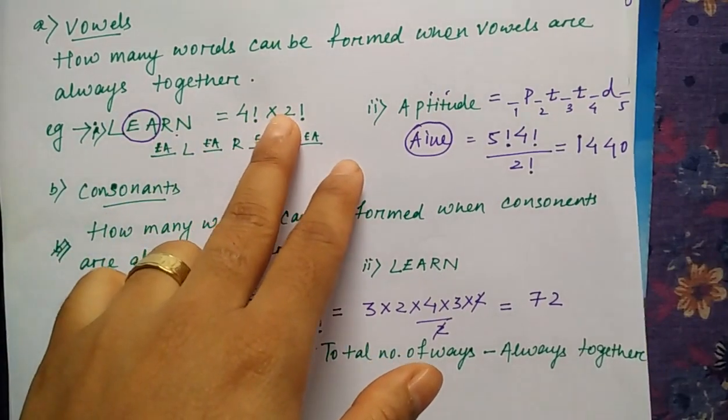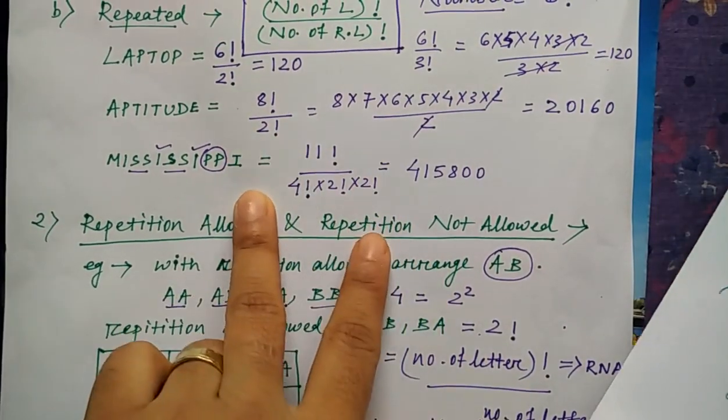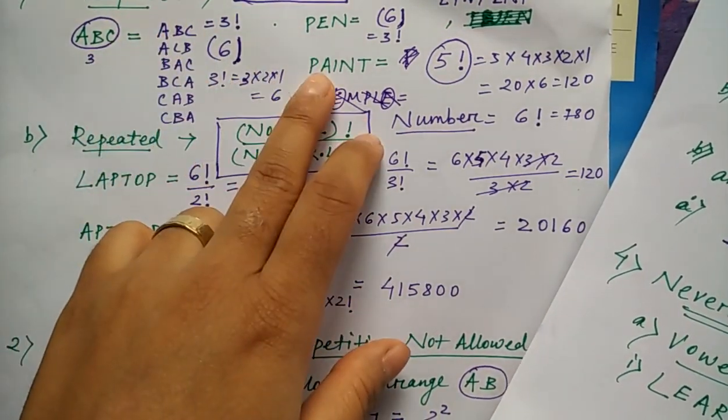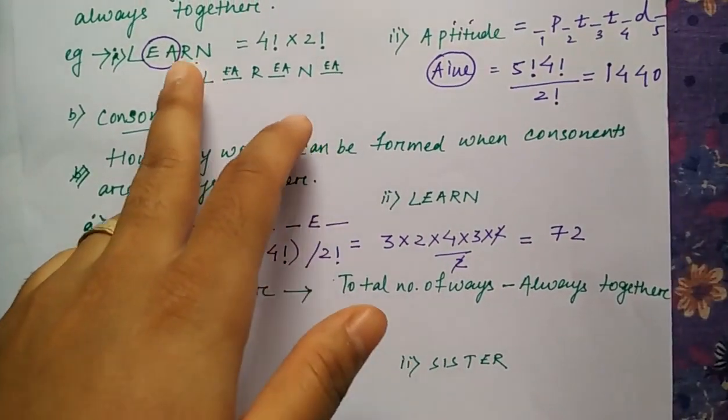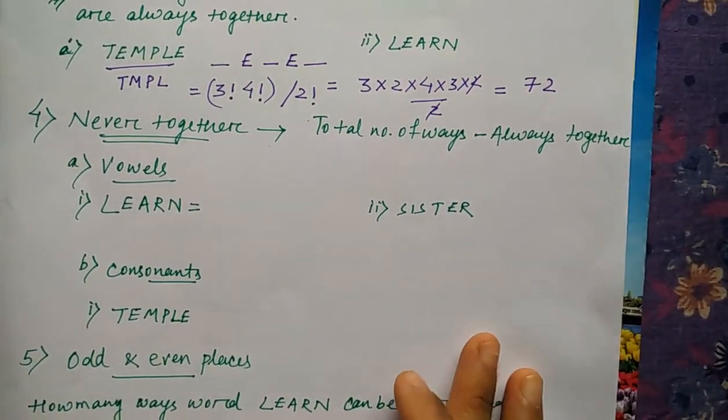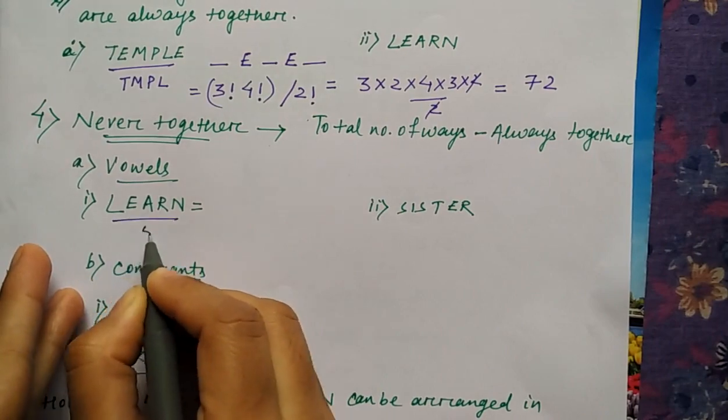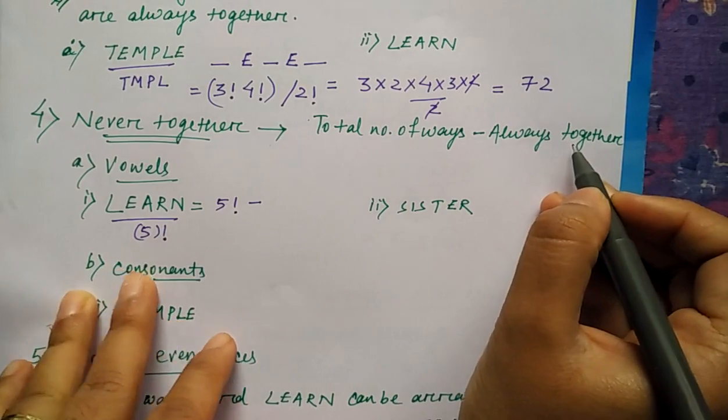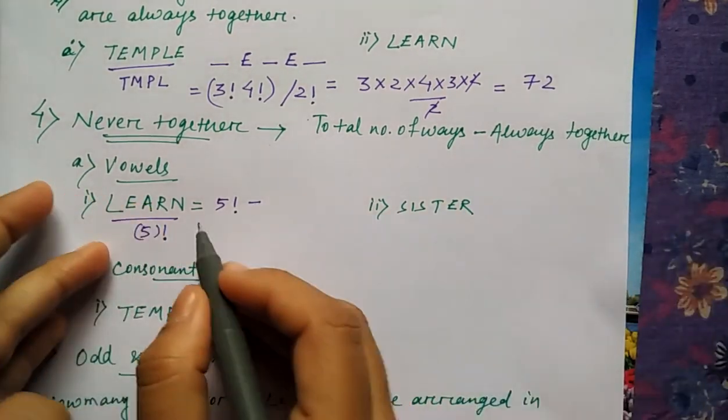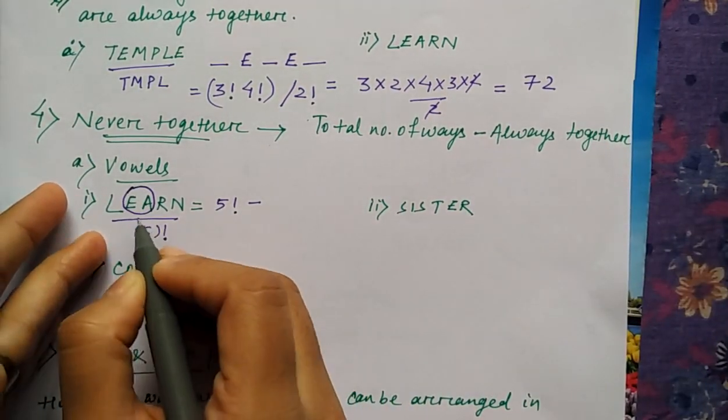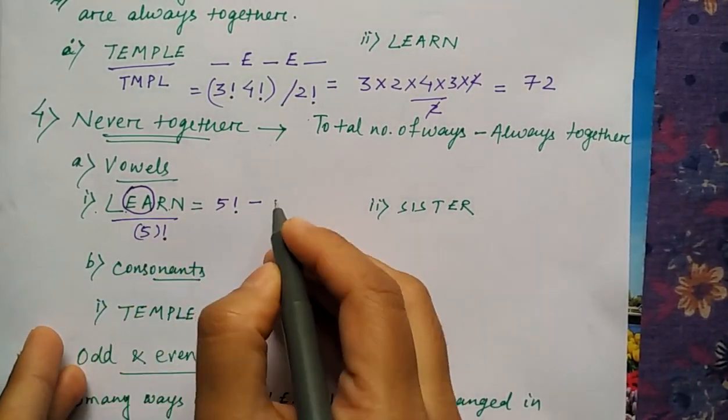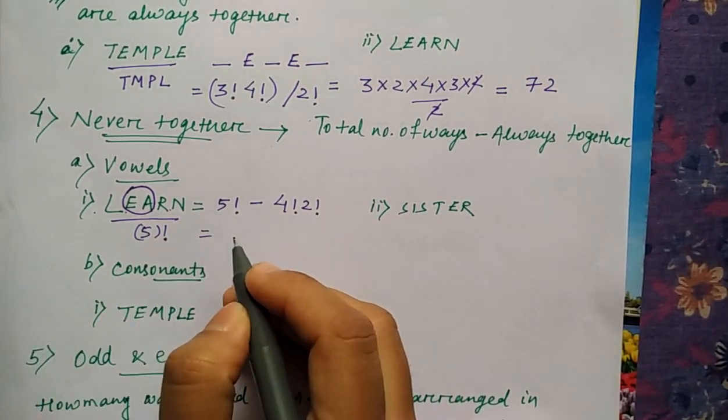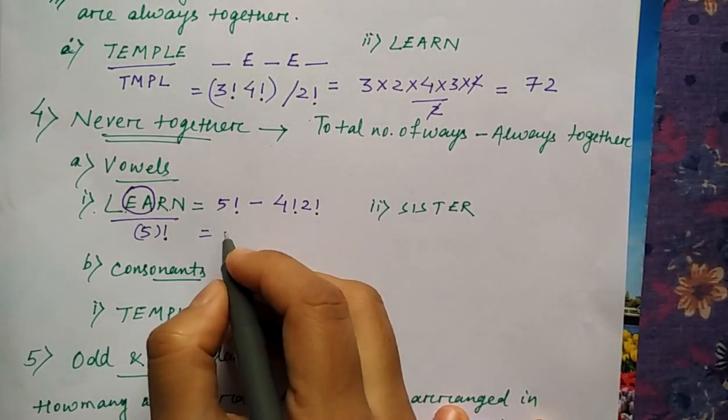Always together for learn we have got four into two factorial and total number of ways we have not done. But I told you that if repetition is not there, total alphabet factorial you can take. It means if learn is there for learn like total number of ways will be totally five letters. So it will be five factorial first. Total number of ways minus always together. Always together in the sense how many alphabet are there? Two alphabet. So you can keep it in one, two, three, four places. So four and itself two. So five factorial minus four factorial into two factorial. So what will be the value?